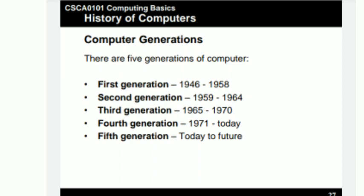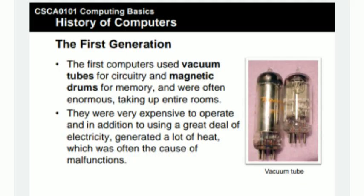Regarding all five generations of computers: the first generation is 1946 to 1958, second is 1959 to 1964, third is 1965 to 1970, fourth is 1971 onwards. As for the fifth generation, just today, it is not fully launched — it is still ongoing.